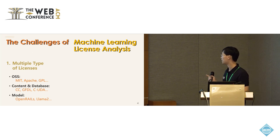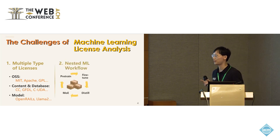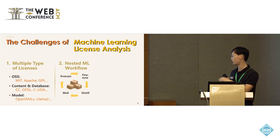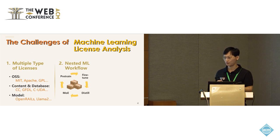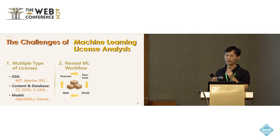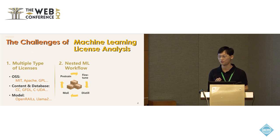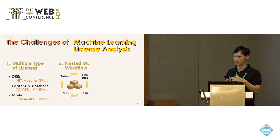We also have model licenses. The second challenge is that the machine learning workflow for constructing a project can be complex. For example, you may use a base model, then fine-tune it to get model B, then distill some knowledge from model C into model B, and finally use MoE to combine the models.